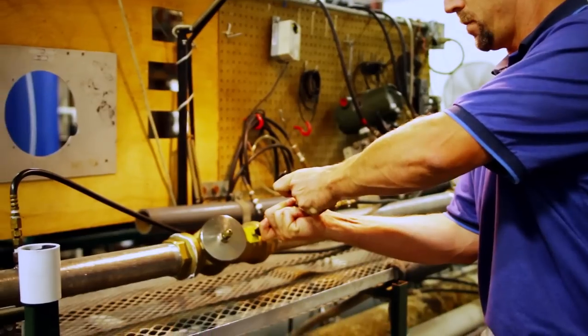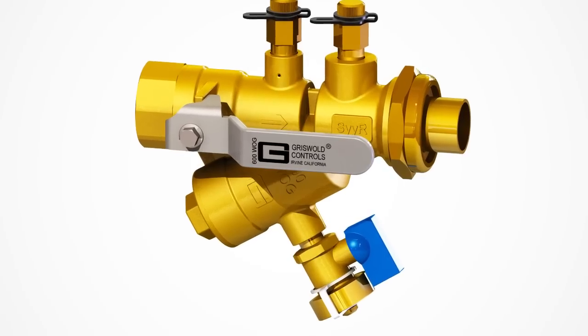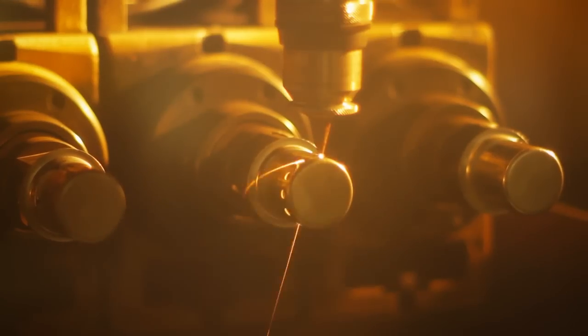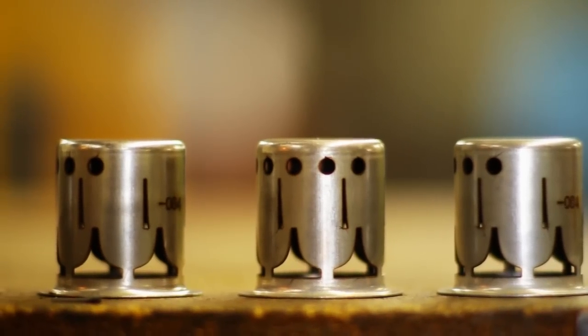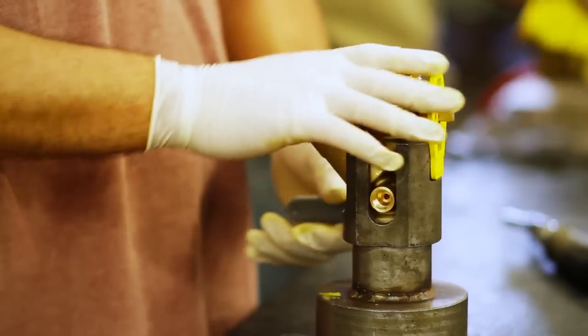Griswold Controls pioneered automatic flow limiting control with the introduction of its 100% stainless steel flow cartridge. It was also the first to create coil piping packages.